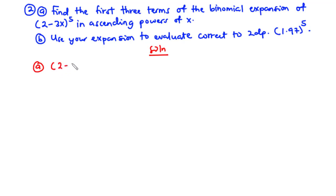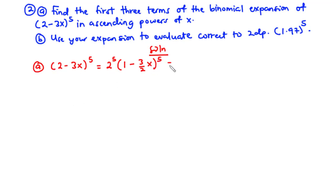The binomial (2-3x)^5 becomes: we factor out 2, giving 2^5 times (1 - 3/2 · x)^5. Since 2^5 = 32, this equals 32 times (1 - 3/2 · x)^5. Now we are going to expand (1 - 3/2 · x)^5.